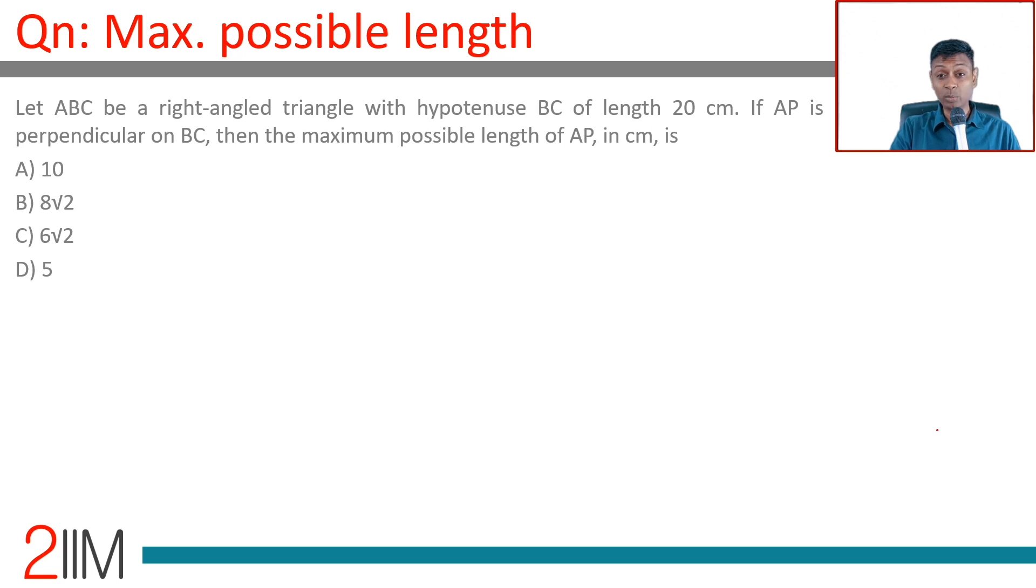Let ABC be a right angle triangle with hypotenuse BC of length 20 centimeters, so BC equals 20 is here. If AP is a perpendicular on BC, then the maximum possible length of AP in centimeters is what we need to find.